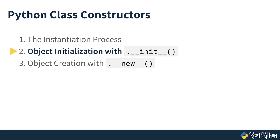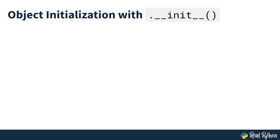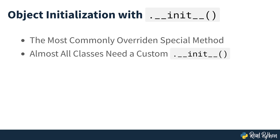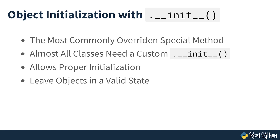Object initialization with __init__. In Python, the __init__ method is probably the most common special method you'll override in your custom classes. Almost all your classes will need a custom implementation of __init__ to allow you to initialize your objects properly. The purpose of this initialization step is to leave your new objects in a valid state so that you can start using them right away in your code.